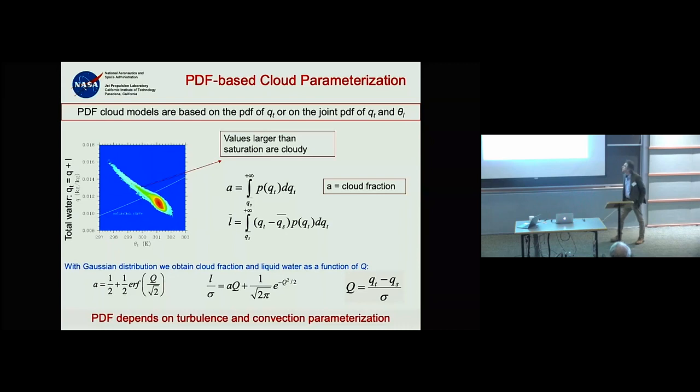If you integrate the probability of total water from the saturation value Q_S to infinity, you get the cloud cover. Looking at this difference gives the mean liquid water. This is of course better done in both temperature and water space, but it's easier to illustrate in total water alone.